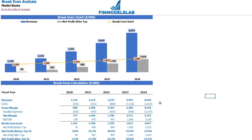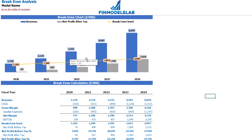On the break-even tab you can find the calculation of the revenue break-even level and a break-even chart. In this particular use case, the revenue break-even level is less than the actual revenue calculation, which means the company is profitable.